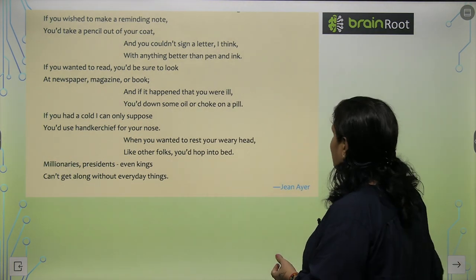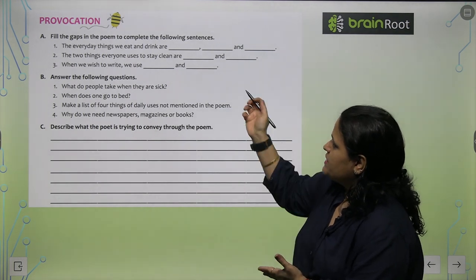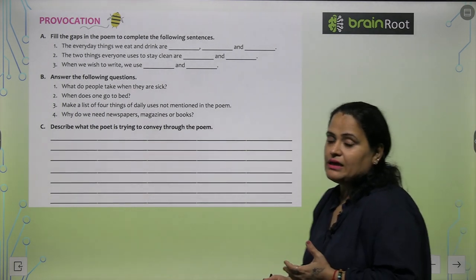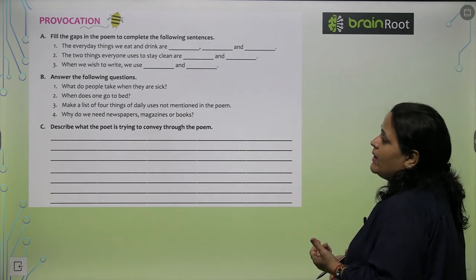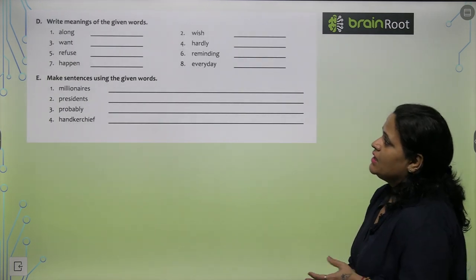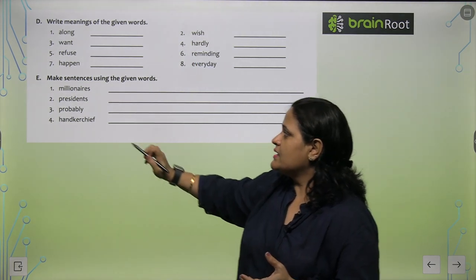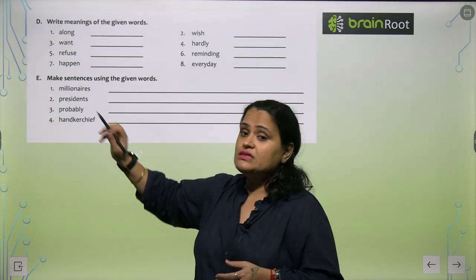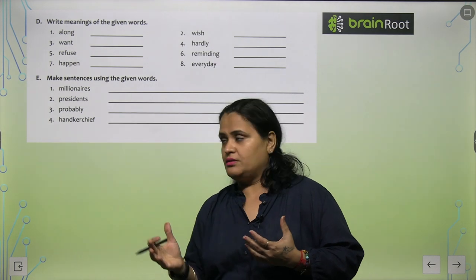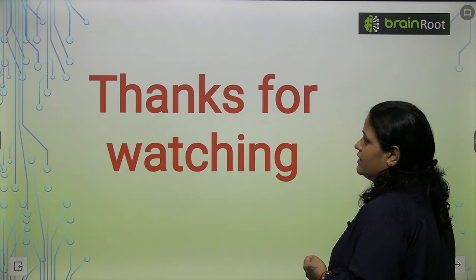Fill the gaps in the poem to complete the following sentences. These are very easy. You have to read the poem and fill it in, and answer the following questions. What do people take when they are sick? Obviously they take any balm or pill, they take medicine. When does one go to bed? One goes to bed at night, when they want rest. Now write meanings of the given words. You will find the meaning and write here. Millionaires - who have a lot of money. Presidents - who is the president? You have to make a sentence. Probably means shayad, maybe. Handkerchief means your hanky, rumal. So in these words you will make sentences afterwards.